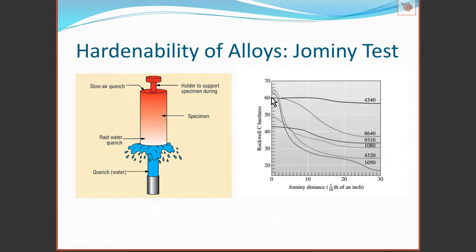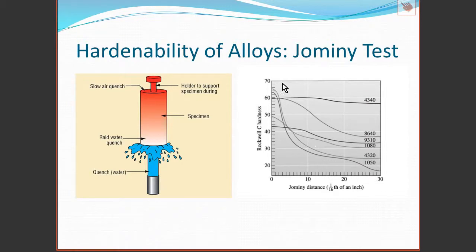The 4340 steel's hardness doesn't change at all whether it's quickly or slowly quenched — this material is very easy to harden. You just have to heat it up and let it cool down even in air. This can be a good thing if you're trying to have a hard material, but it can also be a bad thing if you don't want to inadvertently create a brittle material. The plain carbon 1050 steel only gets hardened in the region close to the quenched end, meaning one would have to take special methods to get the cooling rate such that the material hardens.